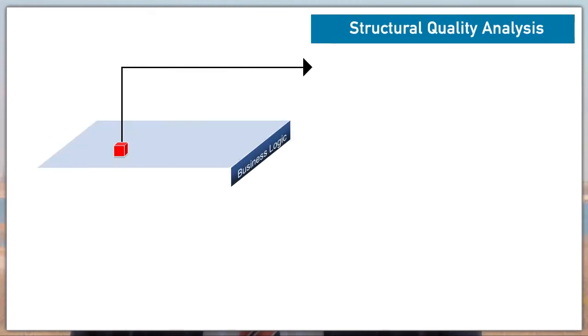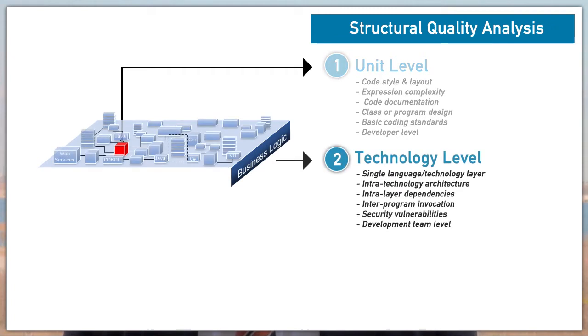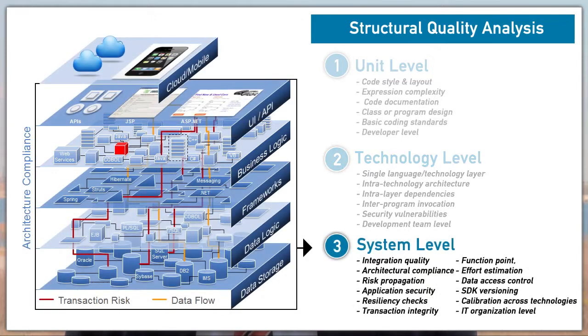The problem is that in order to manage the growing complexity of the kinds of IT systems that we're building, we started building different components in languages and technologies that were specific to the kinds of functions being performed. For instance, a different language or technology for the user interface, for the data logic, for managing data access and data storage, or for managing communication with ERP systems or legacy applications. Each of these can be built in a very different language with a different technology, and the problem this causes is that there's no single developer, or even team of developers, who understands all of it.